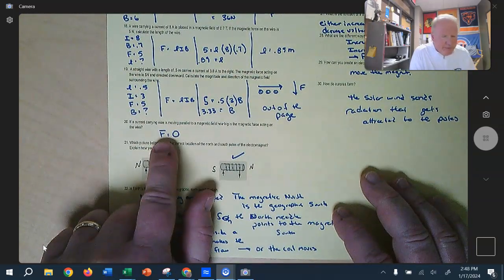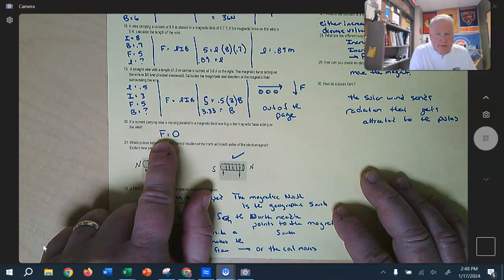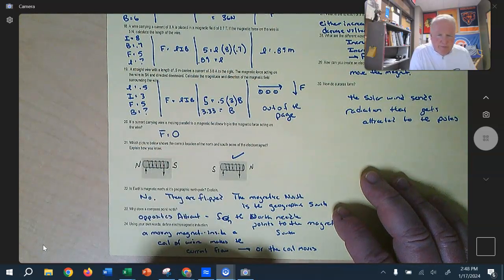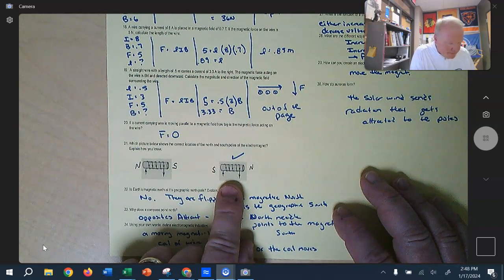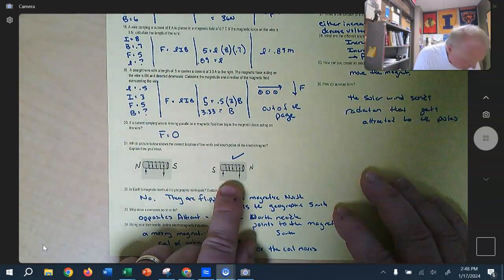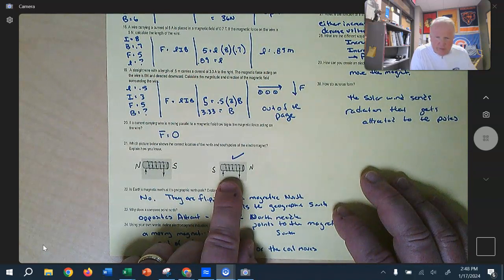One of the things we saw was that if the current flows in the same direction as the magnetic field, there'll be no force. And then you've got, this one was asking which one is correct, I think, and this one is that one right there.